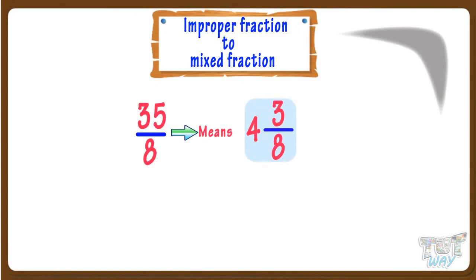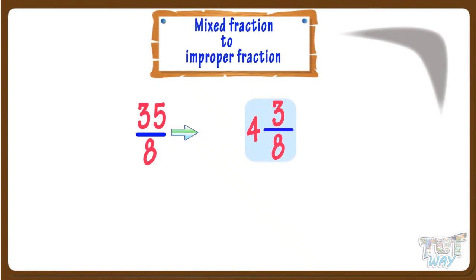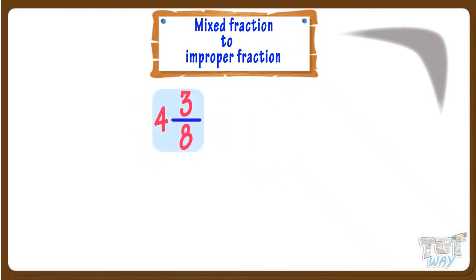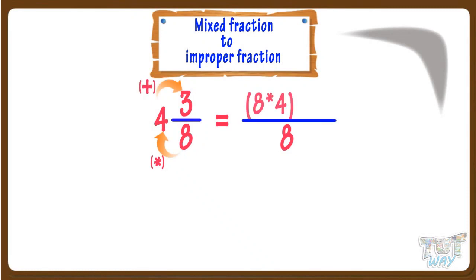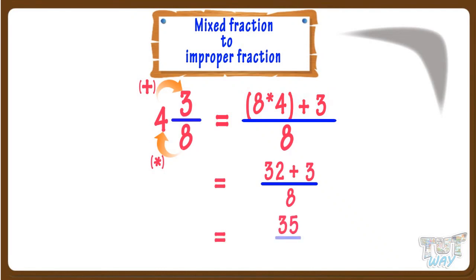Now let's see how we convert mixed fractions back to improper fractions. The denominator will remain the same. For the numerator, multiply the denominator with the whole number and add the numerator to it. Here, we multiply 8 with 4 and add 3 to it. 8 multiplied by 4 is 32, and adding 3 gives us 35. So 35 by 8 is the improper fraction for this mixed fraction.